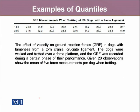Let's look at this data, where the researcher is trying to see the effect of velocity on ground reaction force in dogs with lameness from a torn cranial cruciate ligament. The dogs were walked and trotted over a force platform, and the GRF was recorded during a certain phase of their performance. Given 20 observations show the mean of 5 force measurements per dog when trotting.